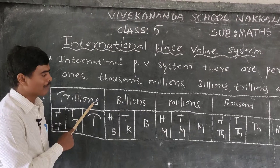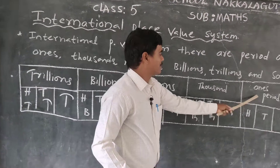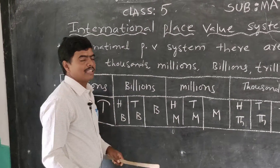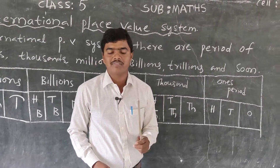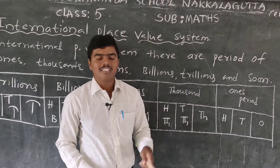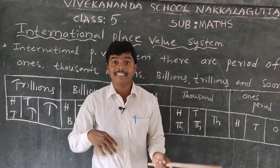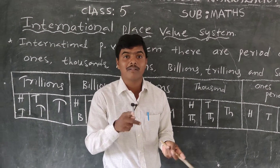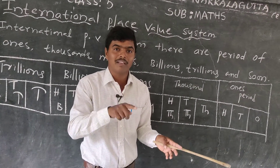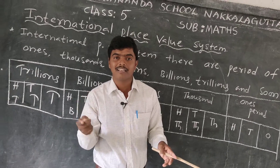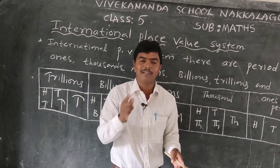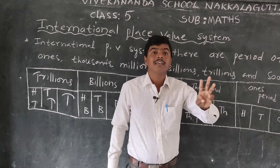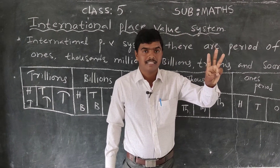So the periods are: ones, thousands, millions, billions, trillions. For an easy memory trick for the international system — all countries — remember: Milly, Billy, Thrilly. Milly Billy Thrilly. Each period has three places.